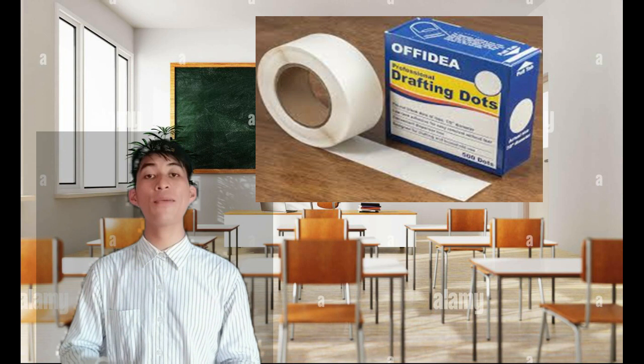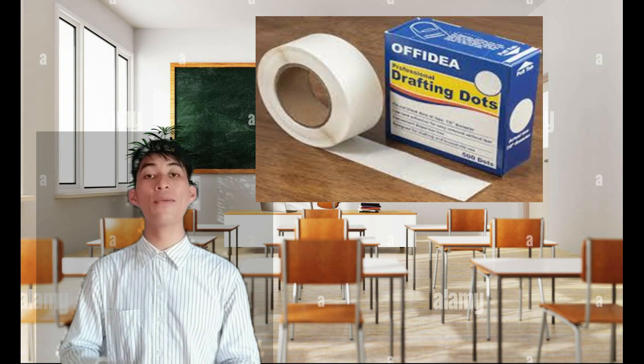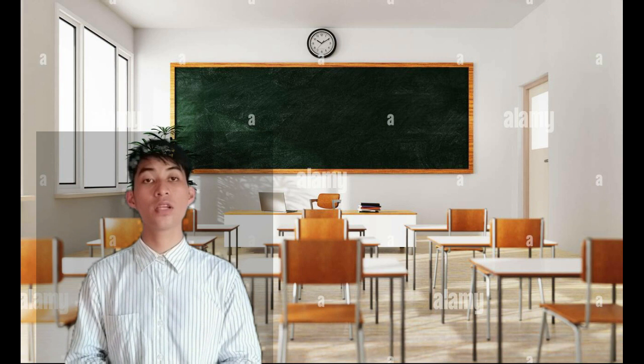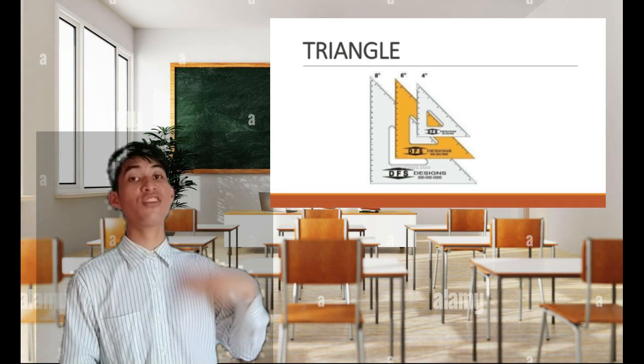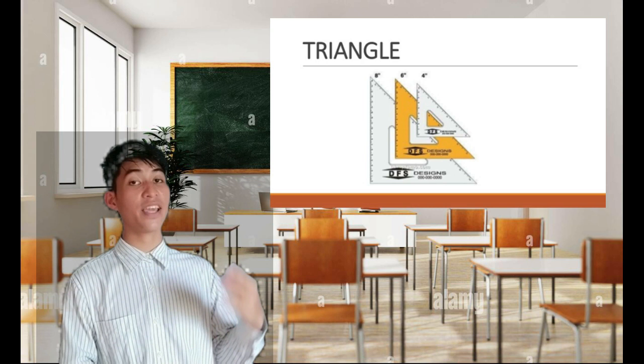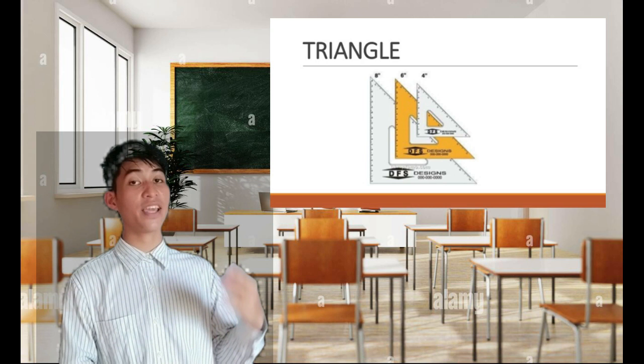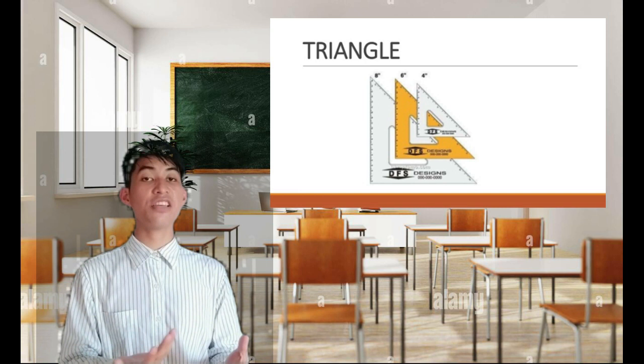Next is the Drafting Tape, used for fastening drawing paper on the drawing board or table. Next is the French Curve, which consists of many templates that are excellent tools for drawing irregular curved lines that are not part of a circle or ellipse. Next is the Triangle, the three-sided drawing instrument which typically has two equal sides meeting at a 90-degree angle, and the third side at 45 and 30, including the 60-degree angle.